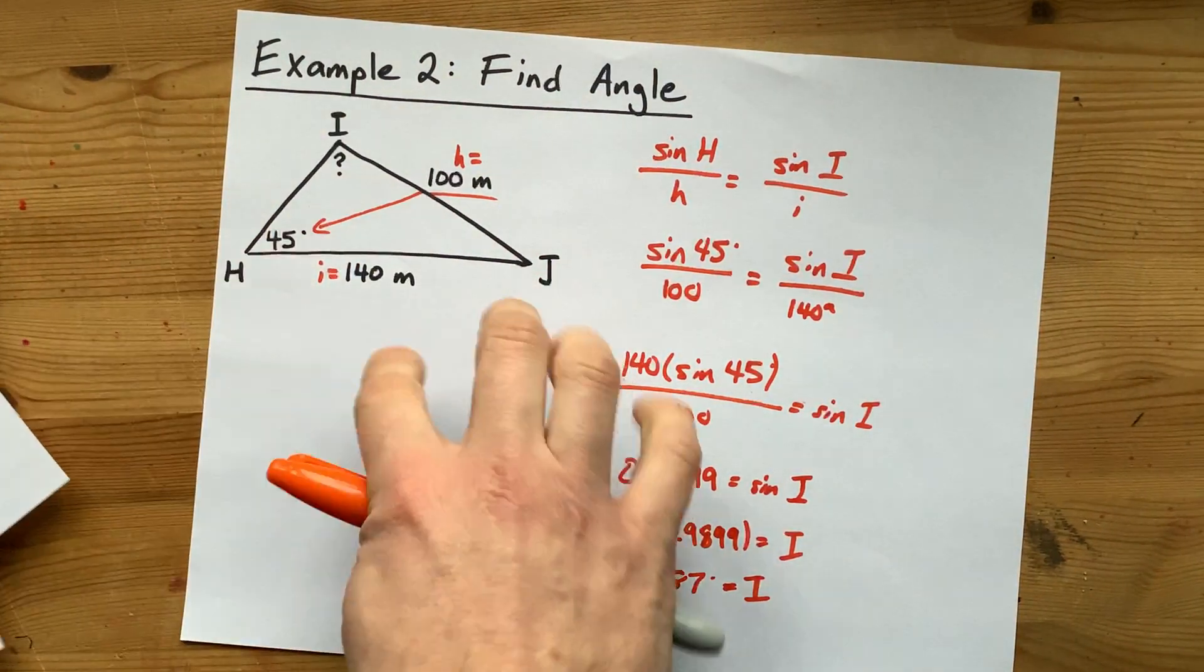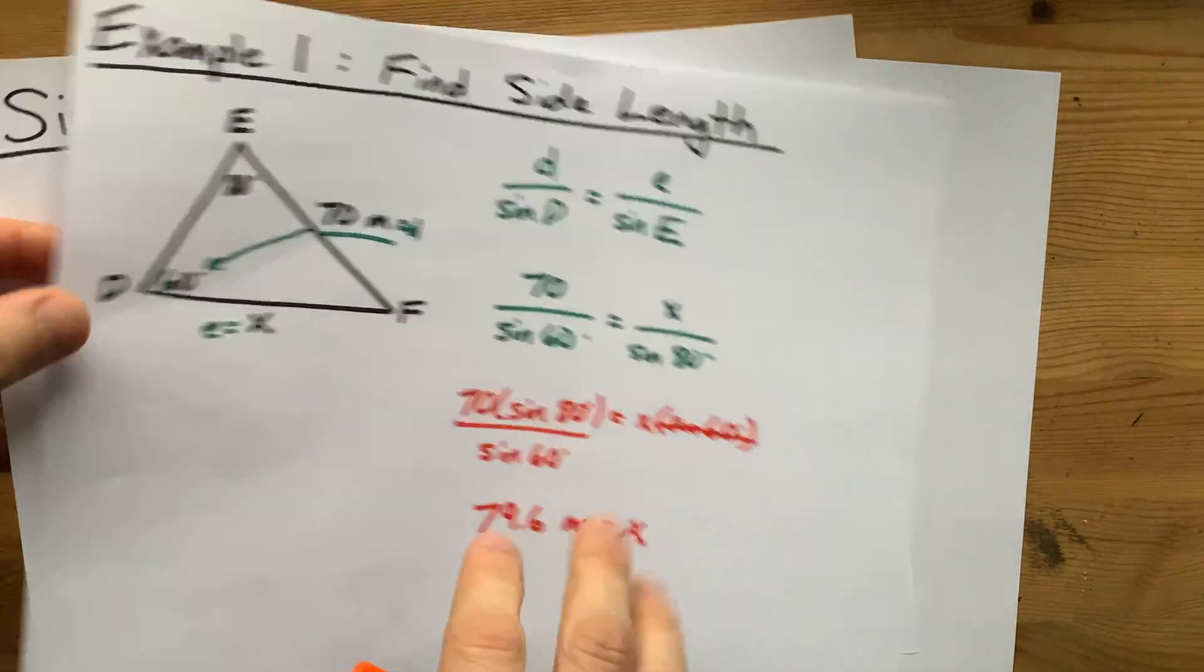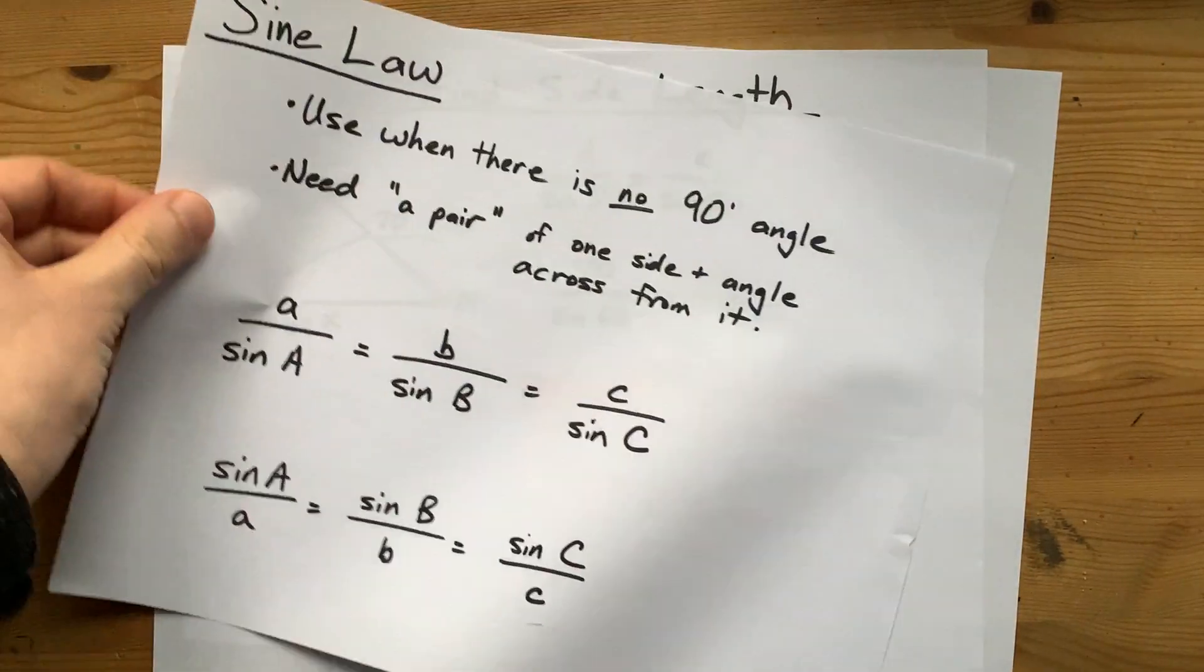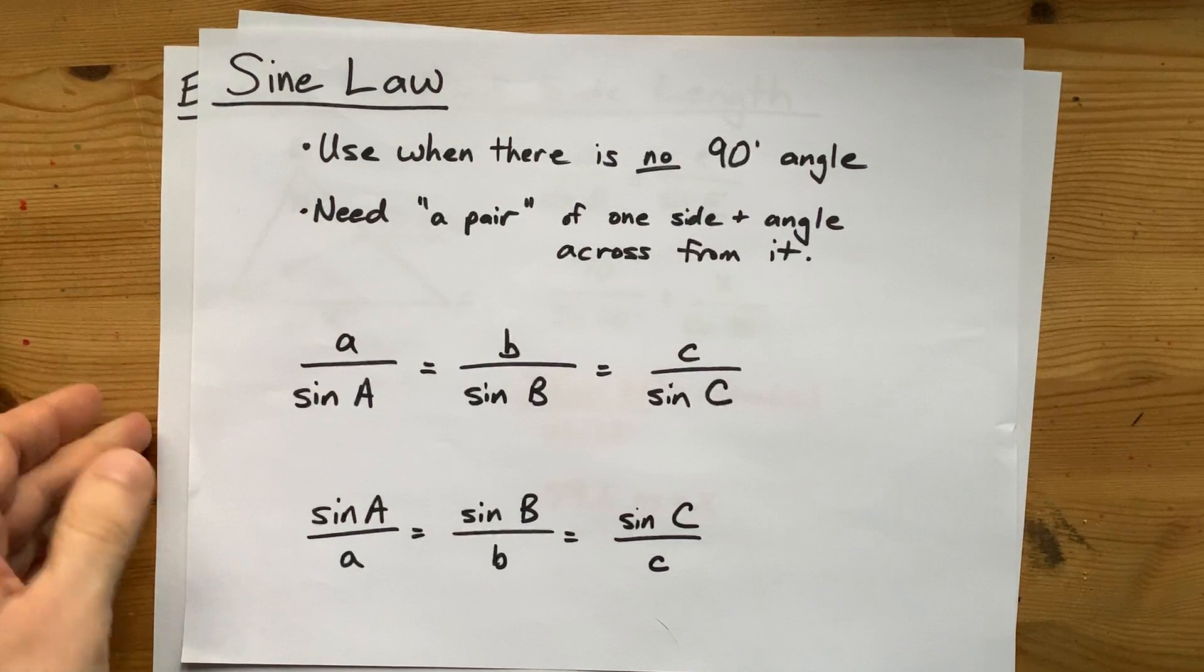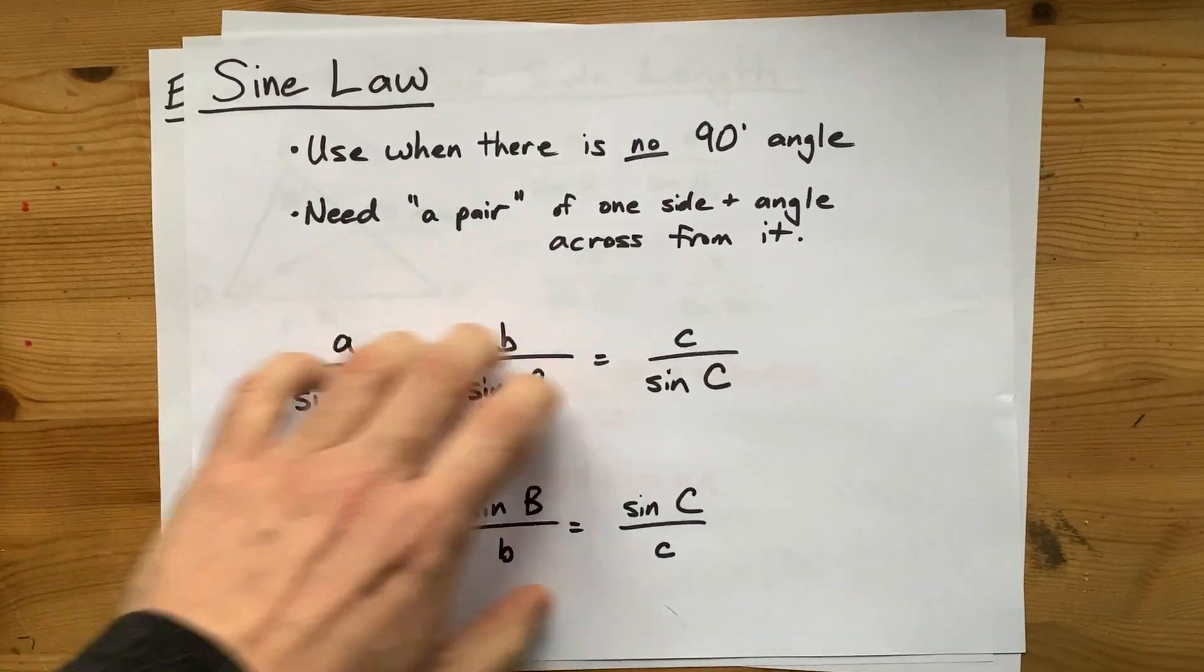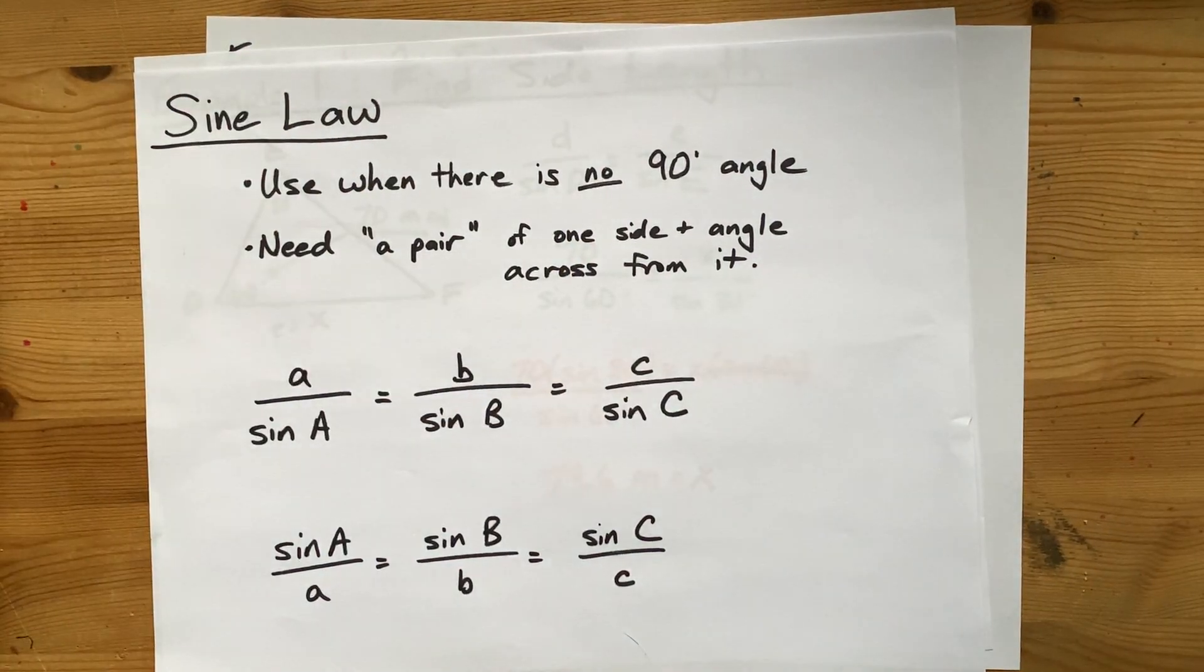If you don't have a pair, a side and the angle across from it, you're going to have to use something called cosine law. Surely your teacher has taught you that, and I'll have a video about that coming out very soon. See you soon. Best of luck.